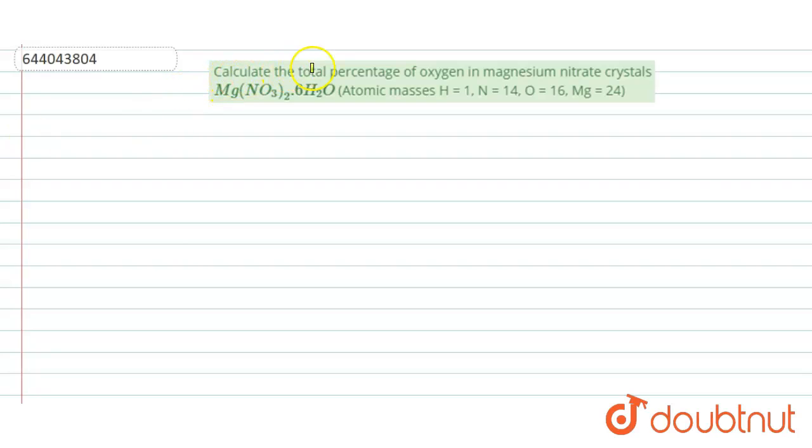The question says calculate the total percentage of oxygen in magnesium nitrate crystals, Mg(NO3)2·6H2O.